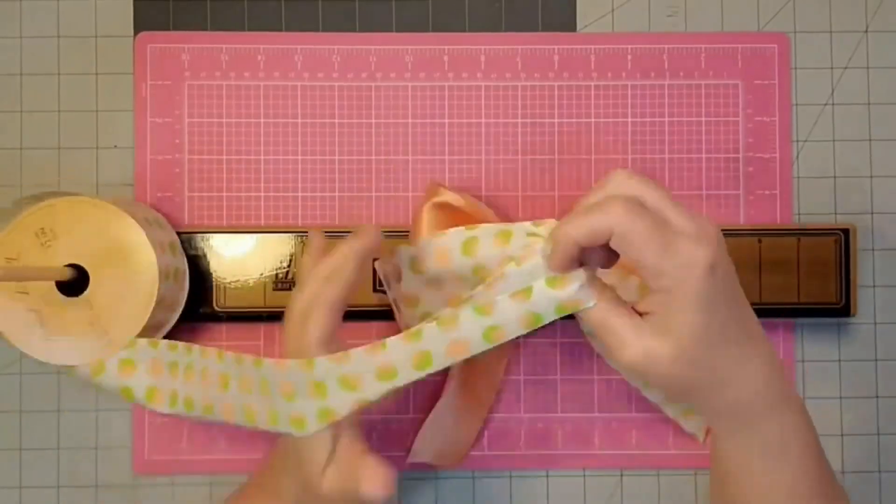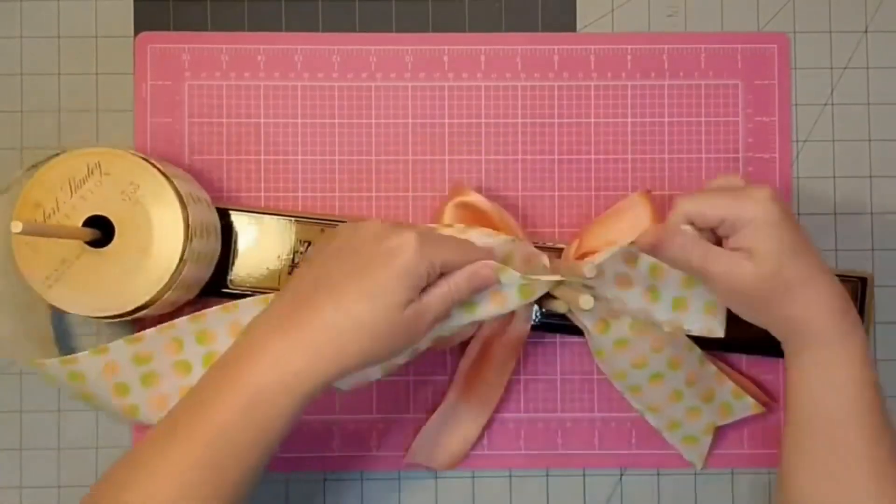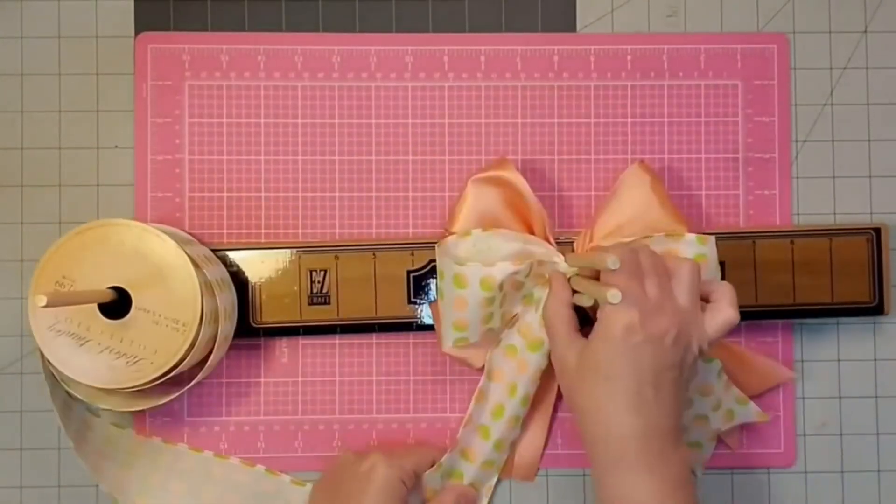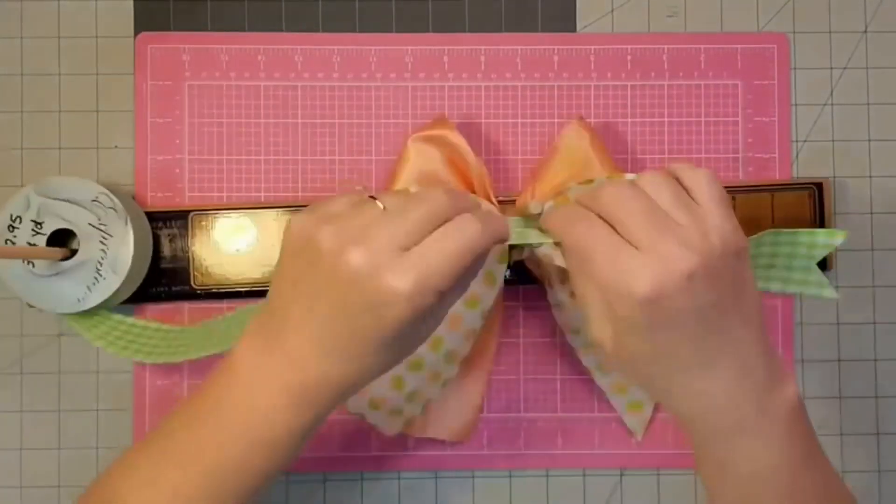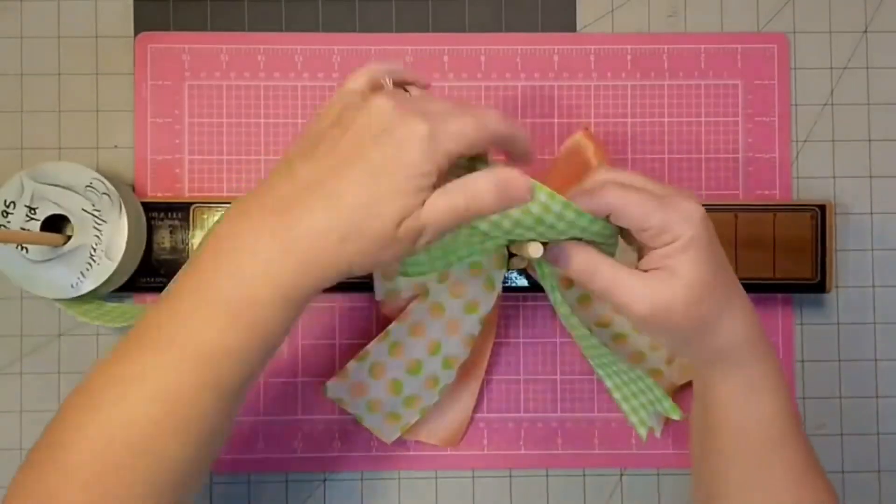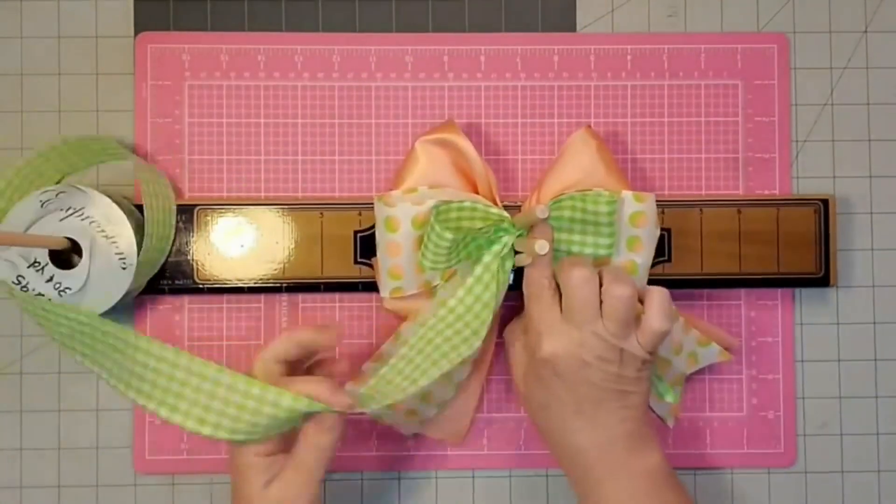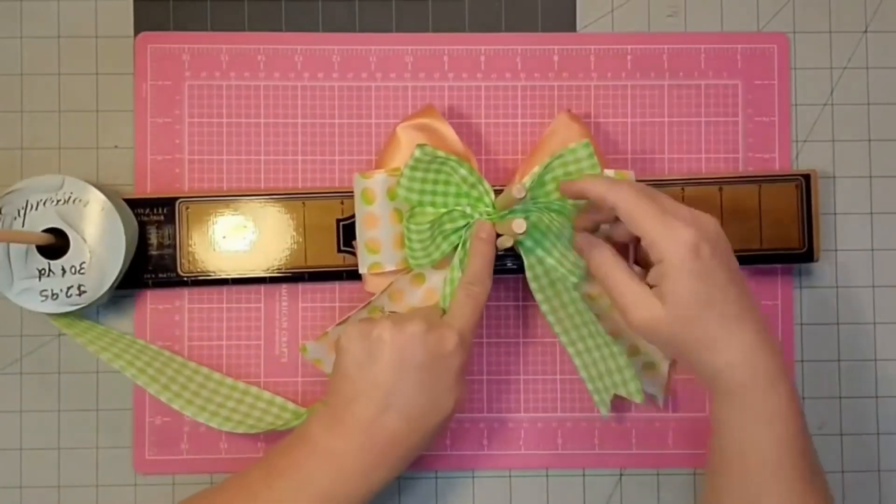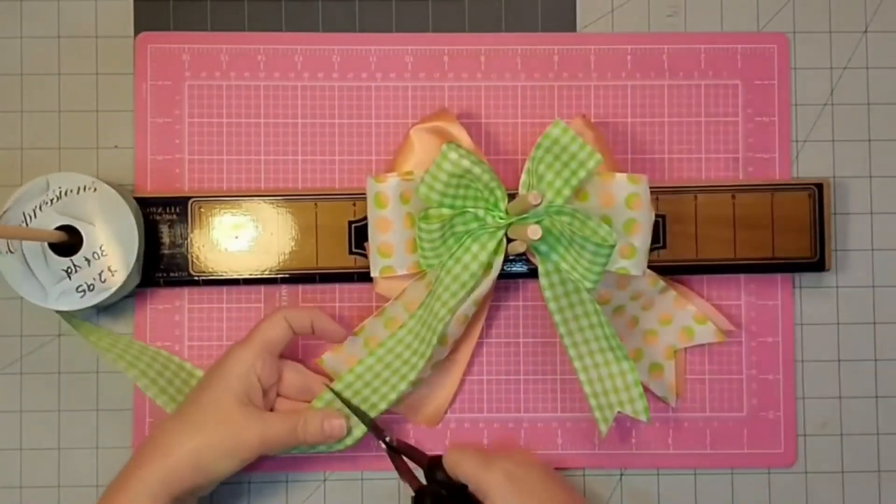For the second ribbon I'm going to make my loops about the same size but I'm only putting one loop on each side and six inch tails. For the third ribbon I'm going to use five inch tails and I'm going to make my loops quite a bit smaller and I'm going to put two loops on each side and end up with that five inch tail.